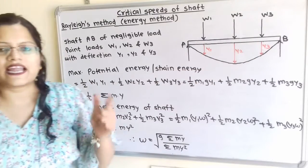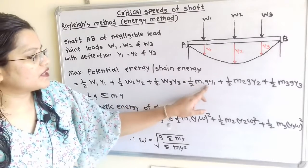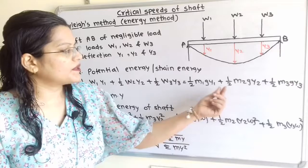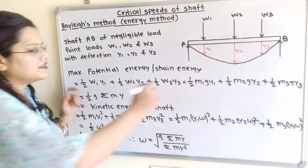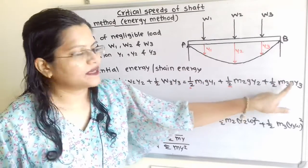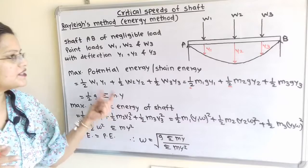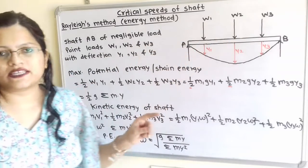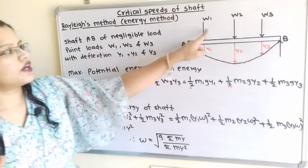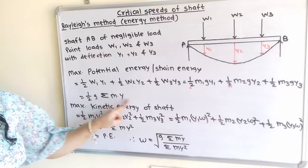Now W can be rewritten as M multiplied by G, that is mass multiplied by gravitational acceleration. So we get half M1 G Y1 plus half M2 G Y2 plus half M3 G Y3. Taking half and G as common terms, we get the expression in brackets as M1 Y1 plus M2 Y2 plus M3 Y3. In short, we write this as summation of M into Y. So the maximum potential energy equals half G times summation of M into Y, depending on the number of point loads.